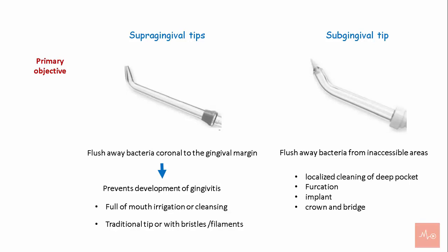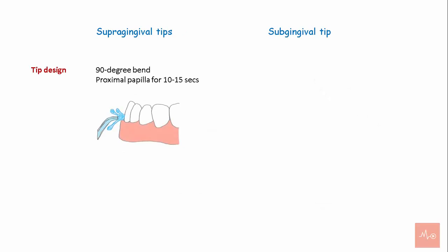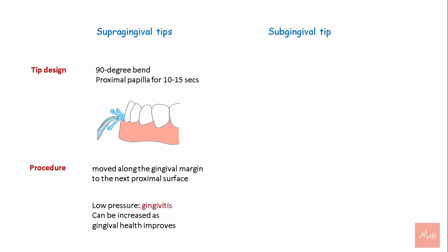For supragingival irrigation, the supragingival tip, which has a 90-degree bend, is placed at the proximal papilla for 10 to 15 seconds. It is then moved along the gingival margin to the next proximal surface and continued for each tooth. In patients with gingival inflammation, it is advised to use the irrigator at low pressure; pressure can be increased as tissue health improves.